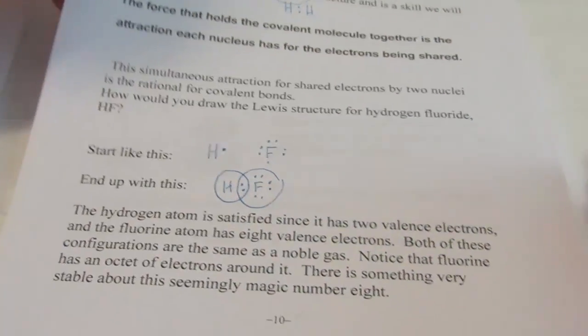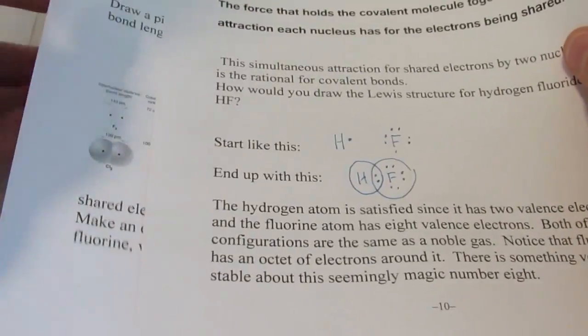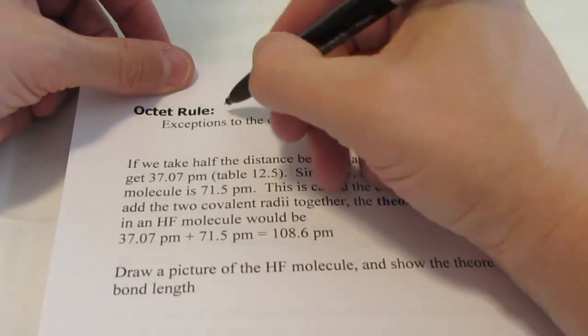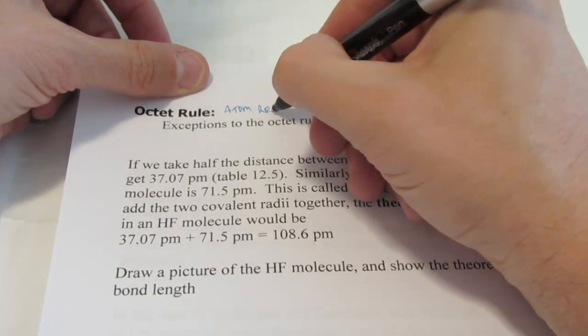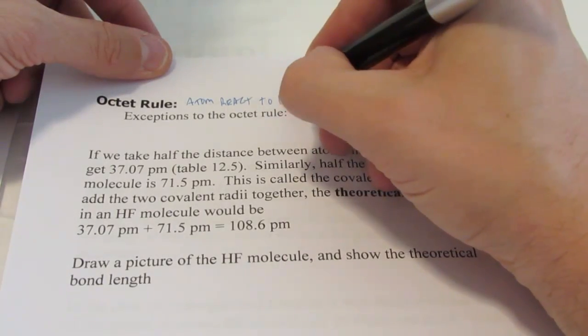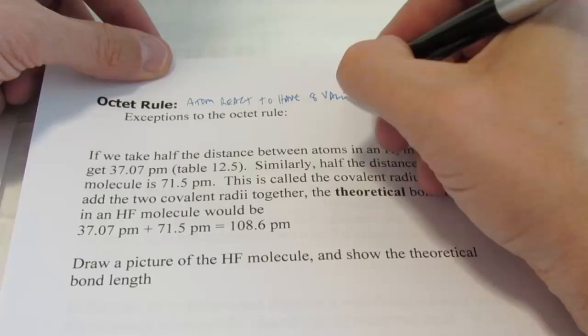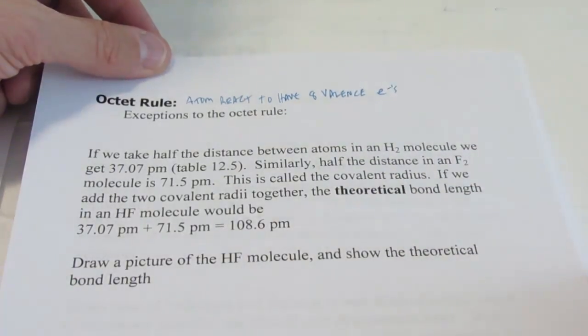So the hydrogen atom is satisfied since it has two electrons, and the fluorine atom has eight valence electrons. Both of these configurations are the same as a noble gas. Notice that fluorine has an octet around it. Two, four, six, eight. There is something very stable and seemingly magical about that number eight. So for the octet rule, atoms react to have eight valence electrons.